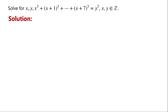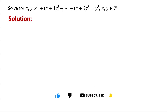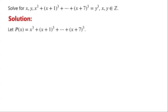The right-hand side of the equation is y cubed, and the left-hand side is a sum of some cubes in x. We let p(x) equal x cubed, plus (x+1) cubed, plus (x+2) cubed, and so on, plus (x+7) cubed.